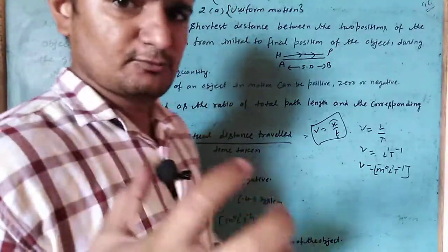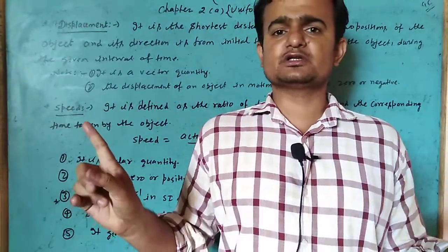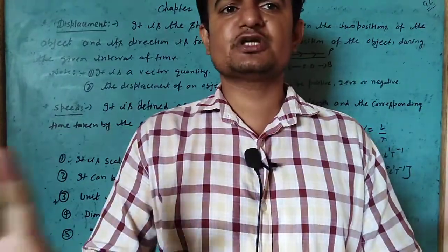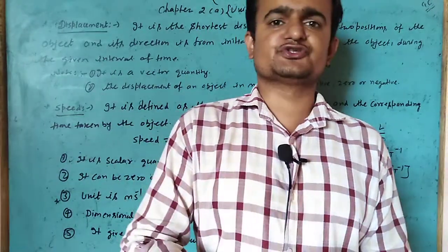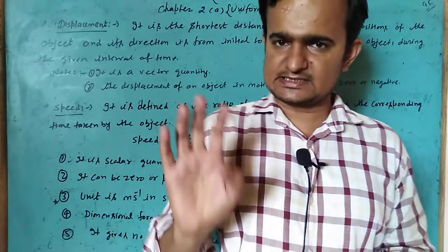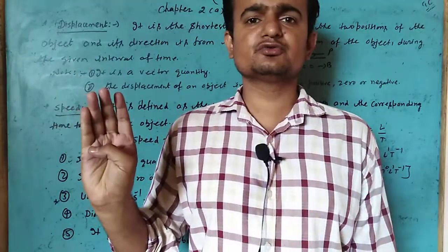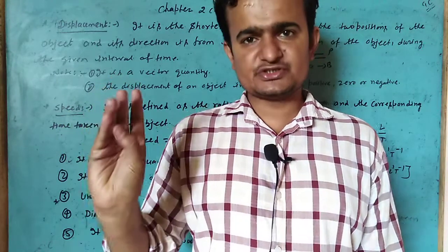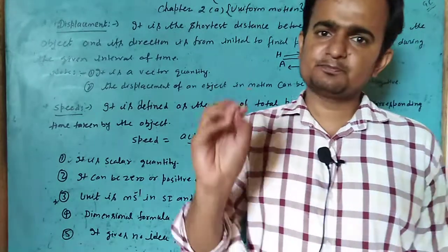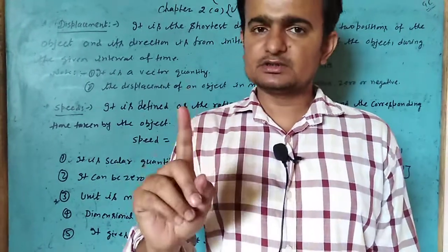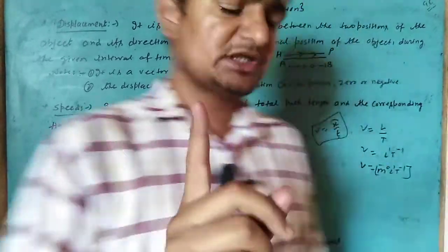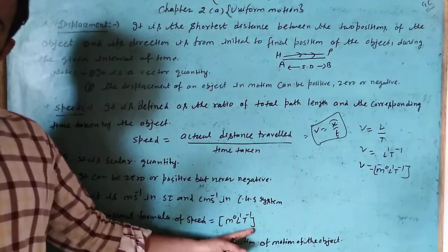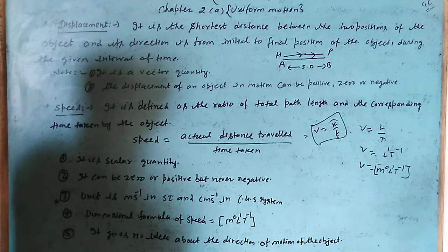Speed gives no information about the direction in which the object is moving. To summarize the key points about speed: it is a scalar quantity, its unit is meters per second in the SI system and centimeters per second in the CGS system. Speed can be zero or positive, but never negative. Its dimensional formula is M0 L1 T-1. Please note down these points in your notebook.